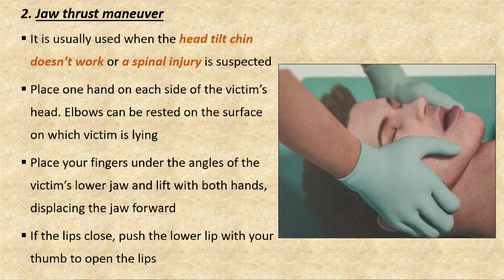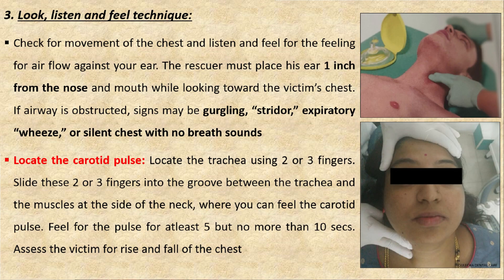If the head tilt chin lift is not effective, the jaw thrust maneuver can be performed: place one hand on each side of the victim's head over the angles of the mouth and lift the jaw forward with both hands. The third technique is look, listen, and feel — look for chest movement and listen and feel for air against your ear placed one inch from the nose and mouth while looking toward the chest. Also locate the carotid pulse by placing fingers in the groove between the trachea and the lateral neck muscles.